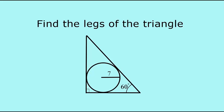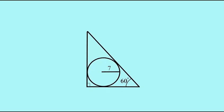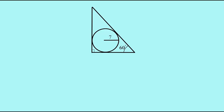In this video we'll look at finding the lengths of the legs of a right triangle with a given angle of 60° and an in-radius of 7. In order to accomplish this, we're going to start by getting the area of the triangle.